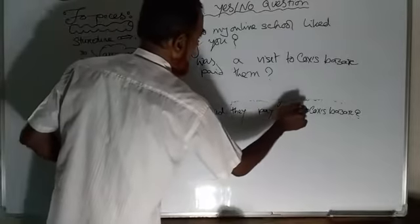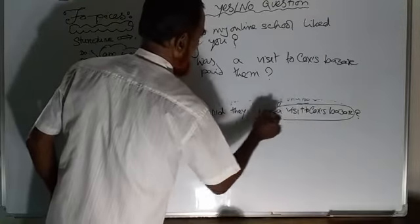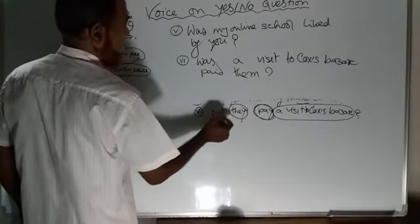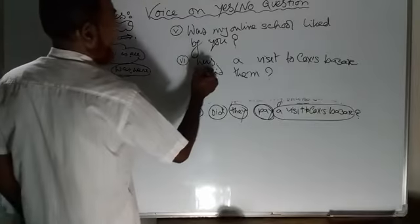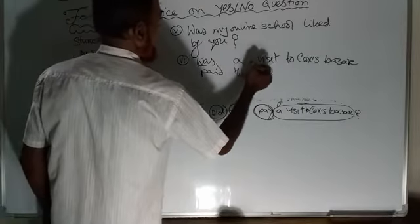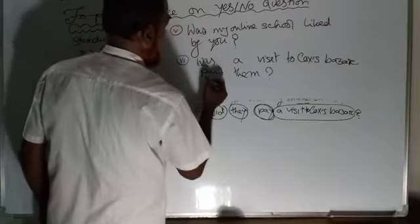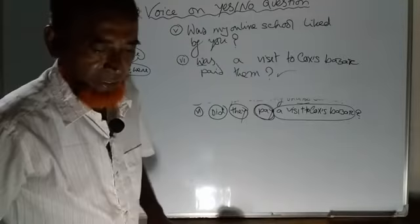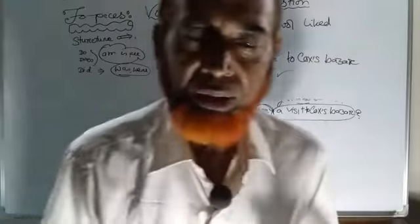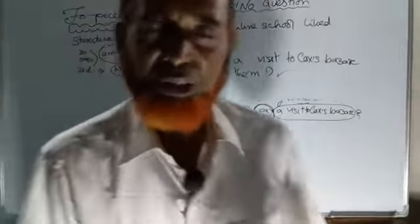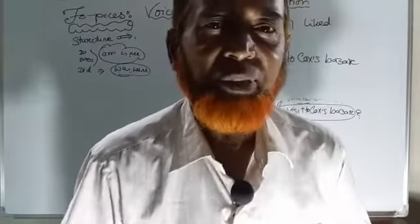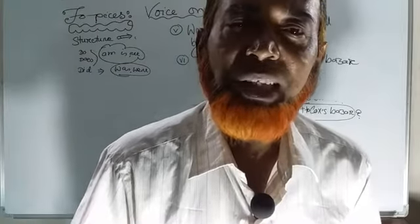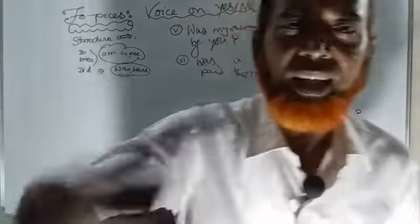Was a visit to Cox's Bazar paid by them? My dear lovely viewer, here this is the object, here this is the verb and subject, and here is the auxiliary verb. So: Was a visit to Cox's Bazar paid by them? I hope you can understand easily, my dear participant. Next time we will discuss another lesson for you. Till then, to your good health, I am taking my short leave. Till then, Allah happy.